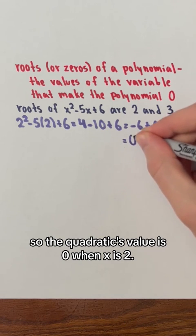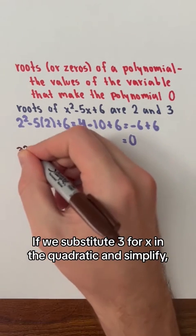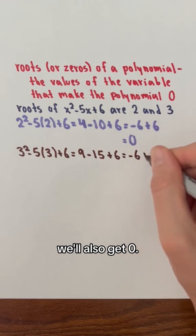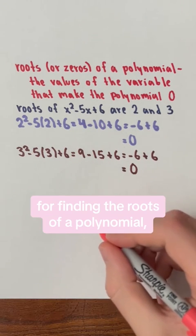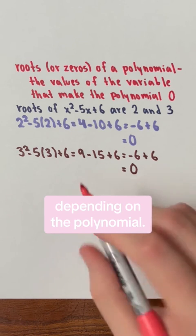So the quadratic's value is 0 when x is 2. If we substitute 3 for x in the quadratic and simplify, we will also get 0. There are different methods for finding the roots of a polynomial, depending on the polynomial.